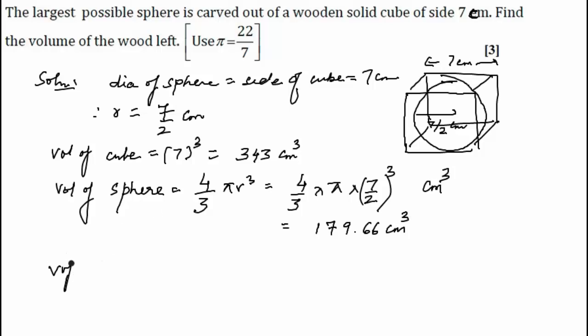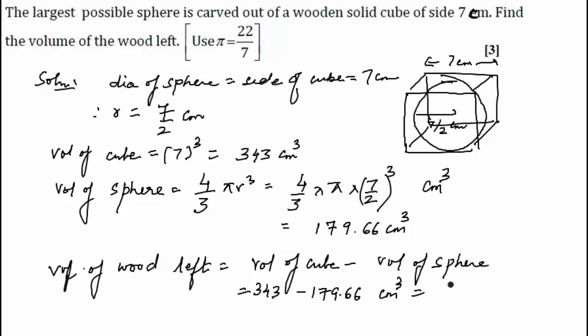And the last step becomes volume of the wood left. That will be equal to volume of cube minus volume of sphere. That is equal to 343 minus 179.66 centimeter cube, which on subtraction gives us 163.34 centimeter cube, which is the answer.